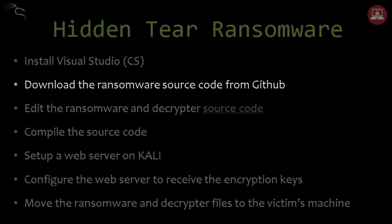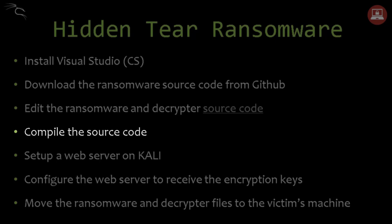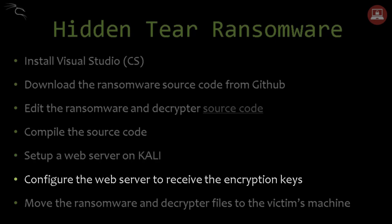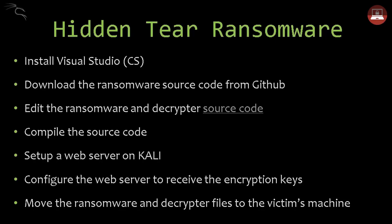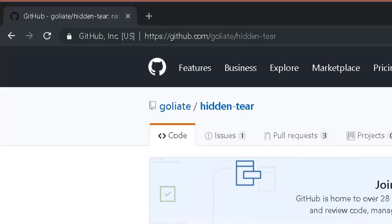You need first to install Visual Studio that supports C#. Then we will go to GitHub and install one of the forks of the Hidden Tier ransomware. We will open the files or the projects in Visual Studio and edit those. After that we will set up a web server on Kali, configure it to receive the encryption keys, then move the ransomware and the decryptor to the victim's machine and execute the attack.